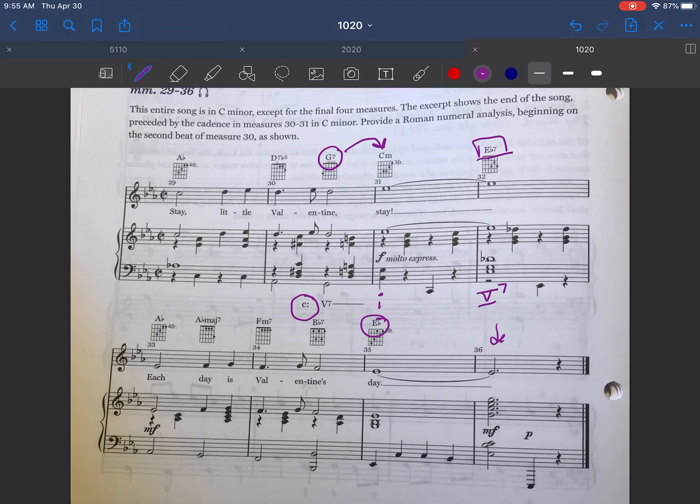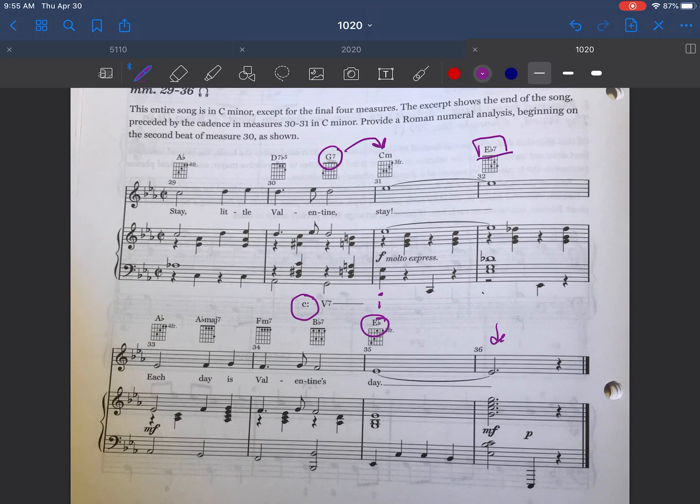So anytime I see a dominant 7th chord I write V7. And then I need to interpret. I'm going to erase all this for a minute. So I'm going to write V7 because I know that this is the dominant 7th chord. The next question is, is this a dominant 7th chord in C minor? The answer to that is no. So if the answer to that is no, I put a slash underneath that V7 because I know this has to be a secondary dominant chord.